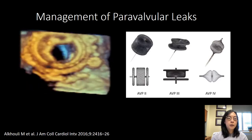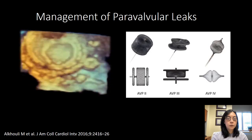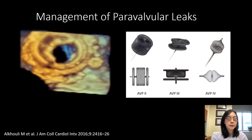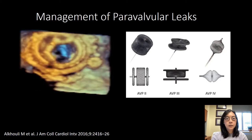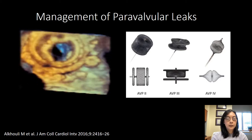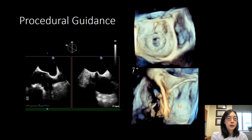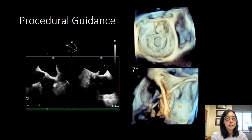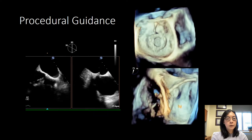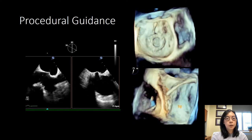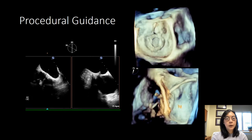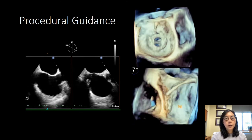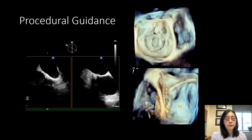We have many percutaneous options now for paravalvular leaks and so many patients instead of going straight for surgery are undergoing percutaneous procedures. Here is an example of a mechanical valve with a percutaneous device in place, along with a series of different percutaneous devices. 3D echocardiography, in addition to assessing severity and location, is useful for guiding procedures — here we see guidance of the transeptal puncture and then the catheter with the wire going through the paravalvular leak located anteriorly in this mitral valve, with an off-axis view showing the path of the wire from the septum through the valve into the ventricle.